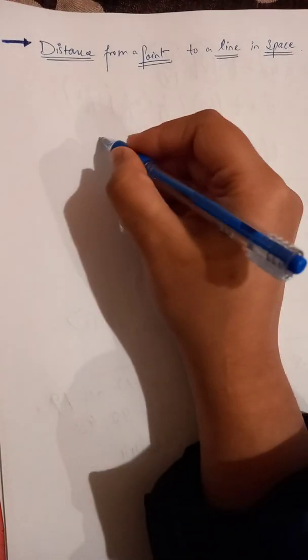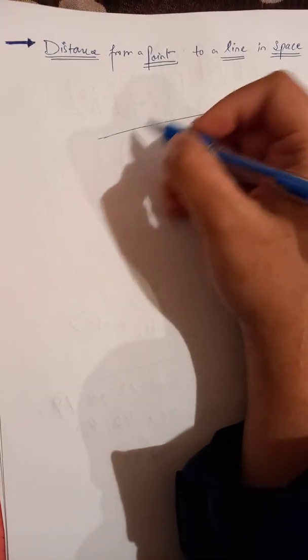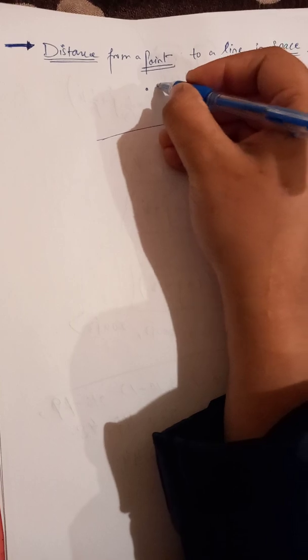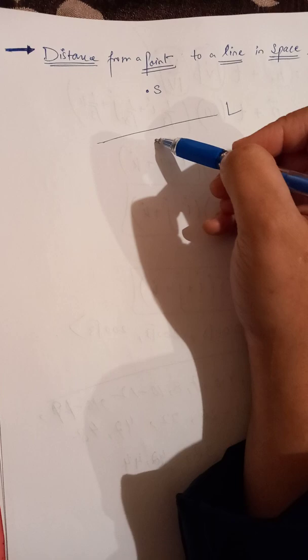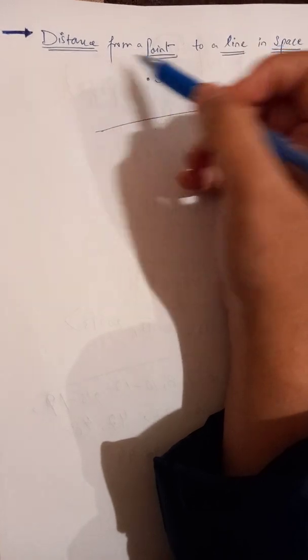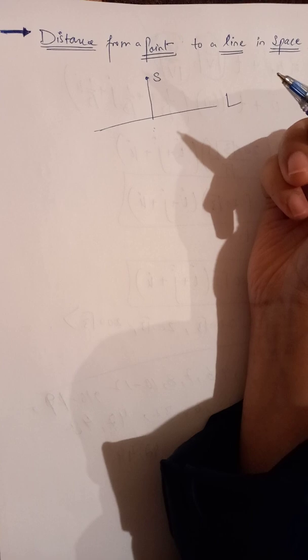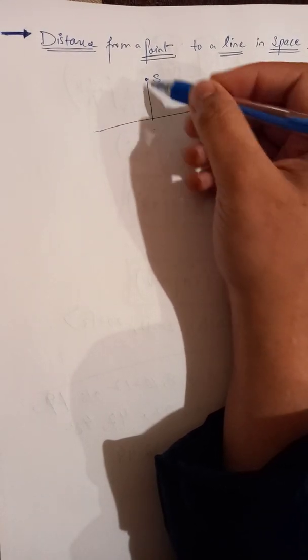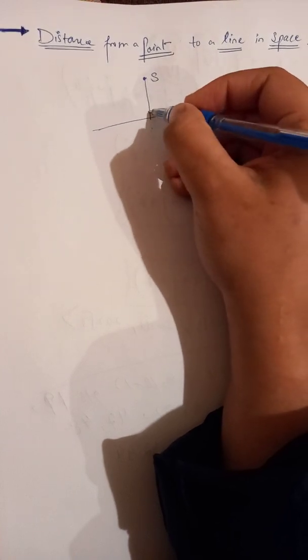This video is about finding the distance from a point to a line in 3D space. Let's say we have a line L and a point S. We need to find the shortest distance between the point and the line, which will be the perpendicular from the point to the line.